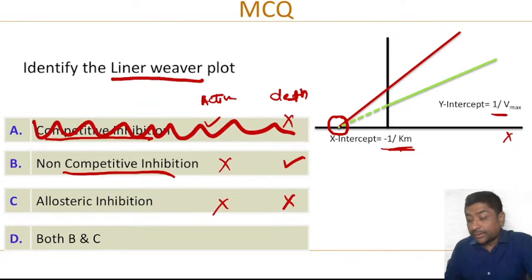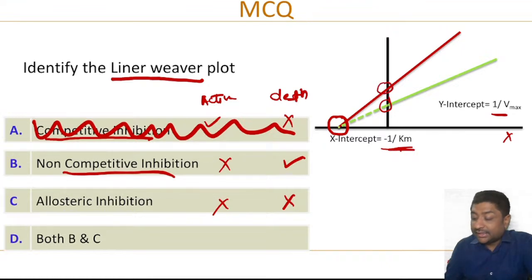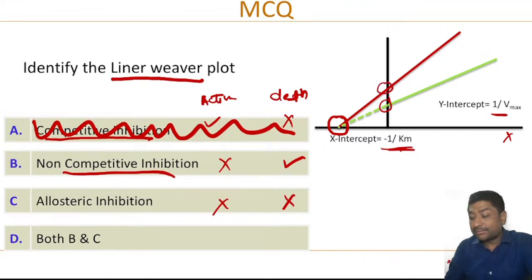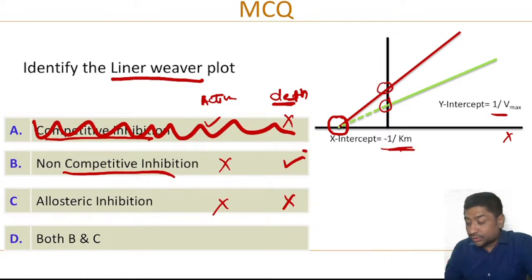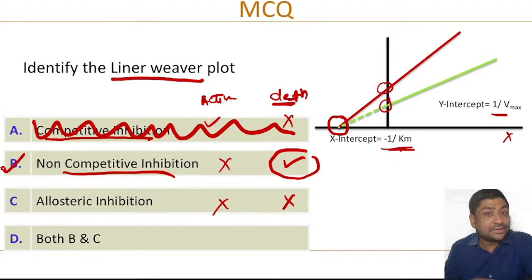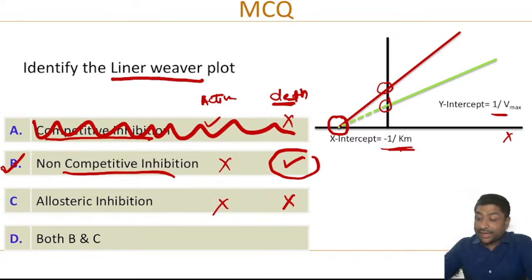The y-intercept is increased, which means the maximum velocity is coming down, meaning there is destruction of the enzyme. Only non-competitive inhibition involves destruction of the enzyme, so the correct answer is B. Is everybody clear?